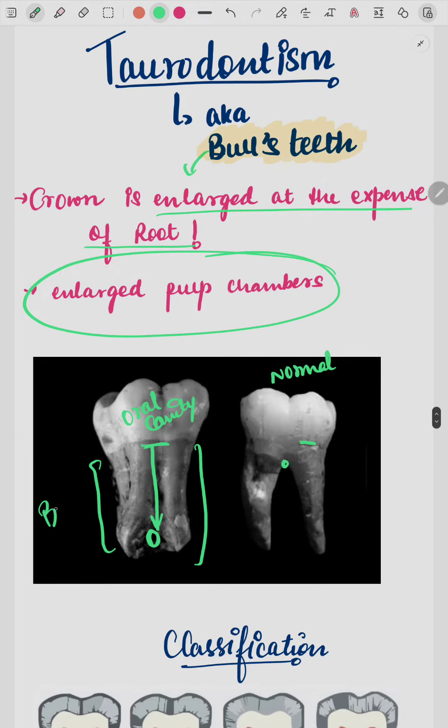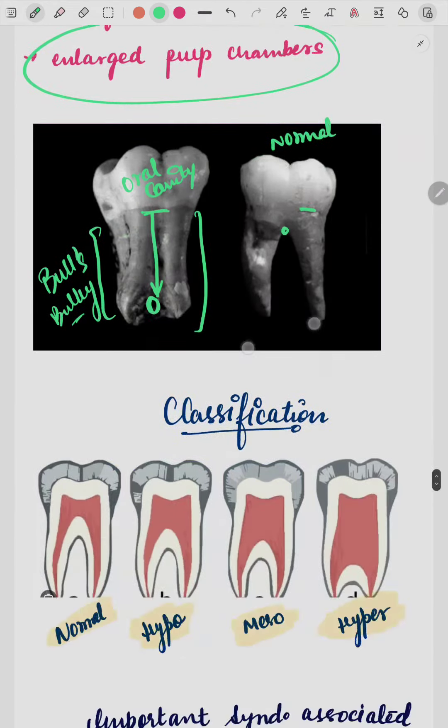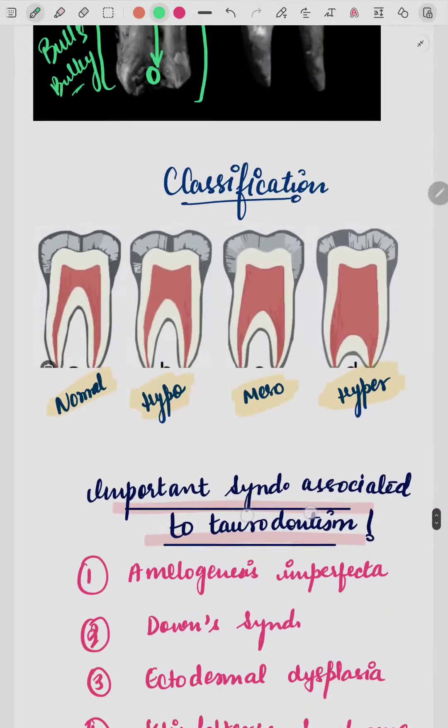It looks like a very bulky tooth, which is the reason we also call it bull's teeth.